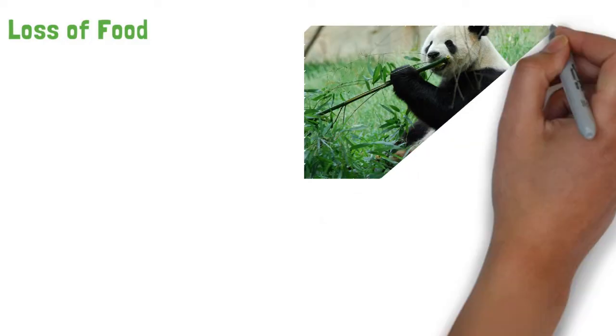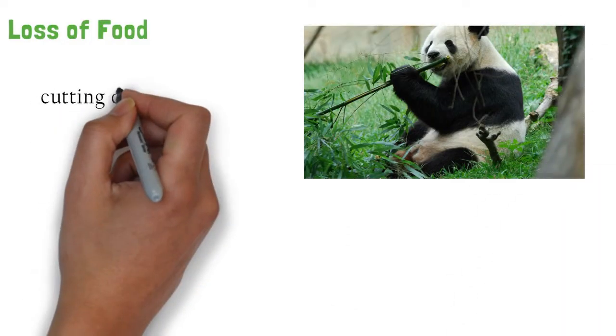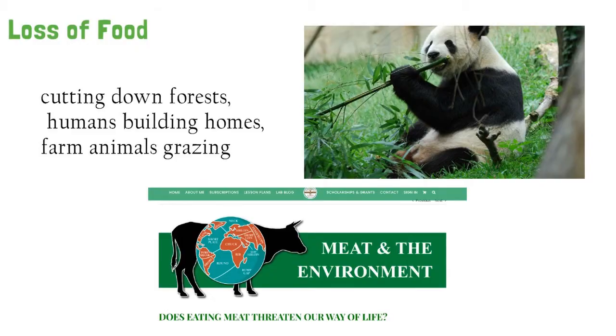Loss of food. About 98% of a panda's diet is bamboo. Finding enough bamboo is difficult for many reasons. Some reasons include cutting down forests, humans building homes, farm animals grazing, and logging.